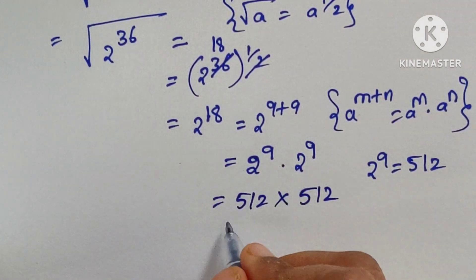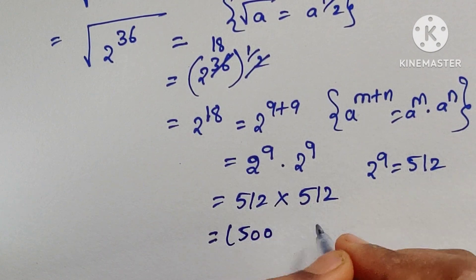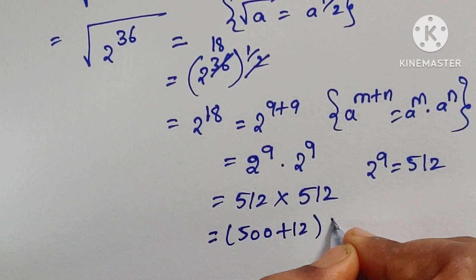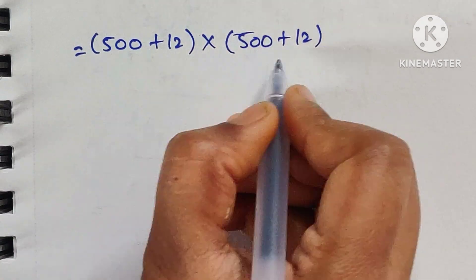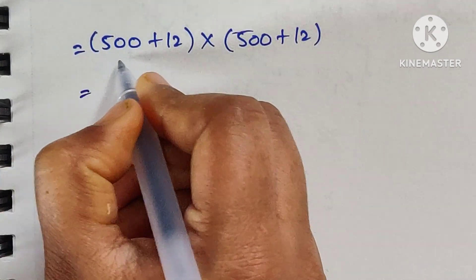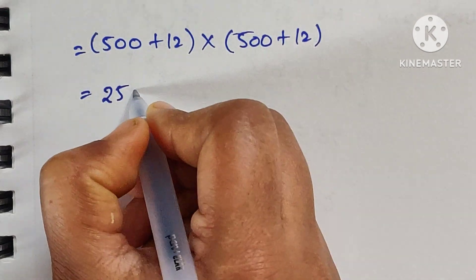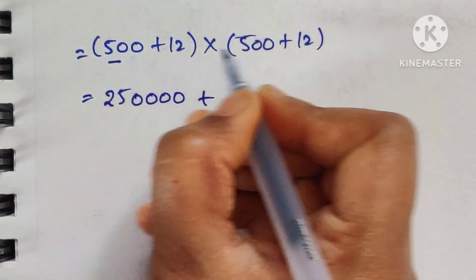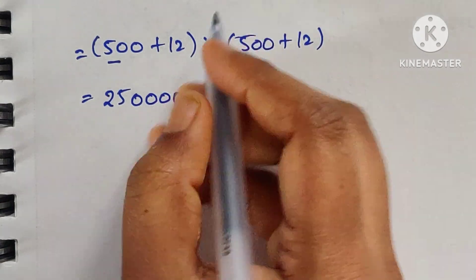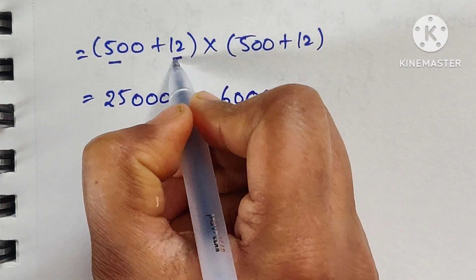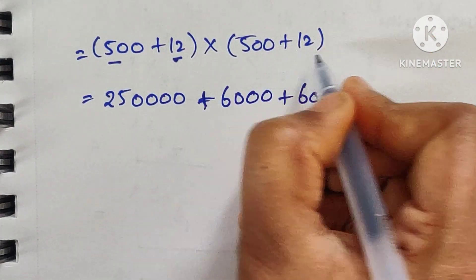Now multiply these two numbers: 512 times 512. Write this as (500 + 12) times (500 + 12). So: 500 times 500 — 5 times 5 is 25, with 2 zeros and 2 zeros, giving 4 zeros total, so 250,000. Then 500 times 12 equals 6,000. Then 12 times 500 equals 6,000. Then 12 times 12 equals 144.